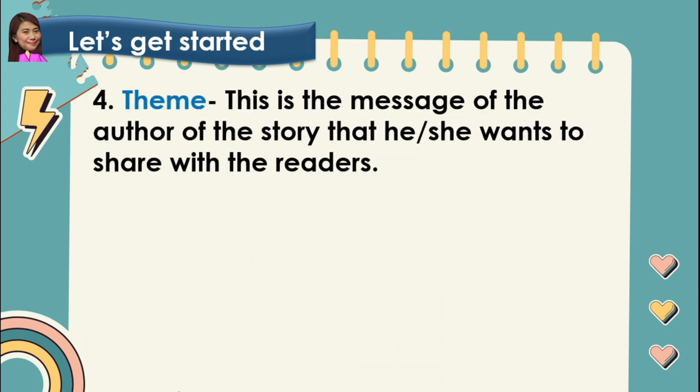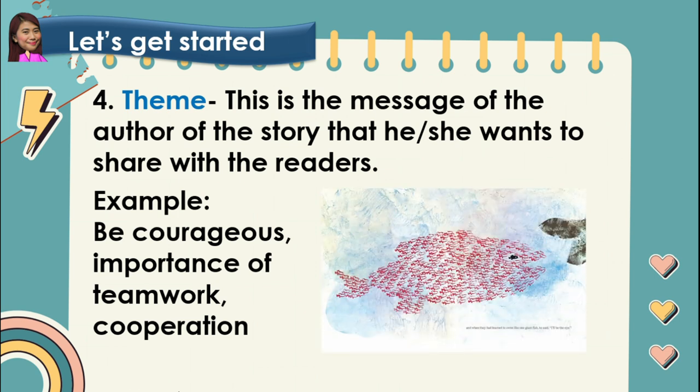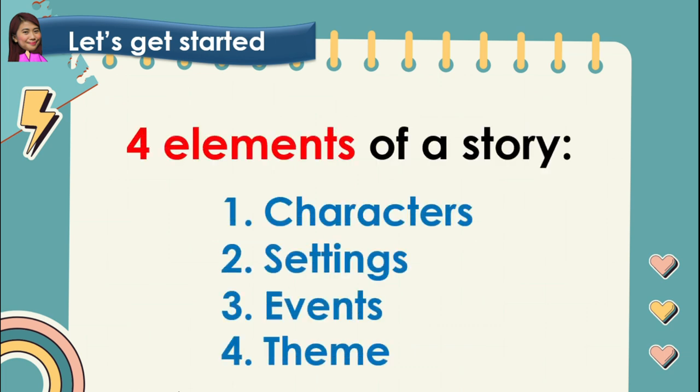And lastly, the fourth element is the theme. This is the message of the author of the story that he or she wants to share with the readers. For an example, in the story Swimmy, the themes are: be courageous, the importance of teamwork, and cooperation. Again, the four elements of a story are characters, settings, events, and theme.